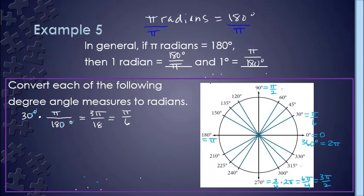What about a 45 degree angle? We could do the computations, but we might also say that 45 degrees represents halfway between 0 and 90 degrees, or between 0 and pi over 2. So what is one half of pi over 2? In mathematics, the word 'of' means to multiply. So I take 1/2 and multiply it by pi over 2. Multiplying the numerators and denominators, I see that 45 degrees is equal to pi over 4.